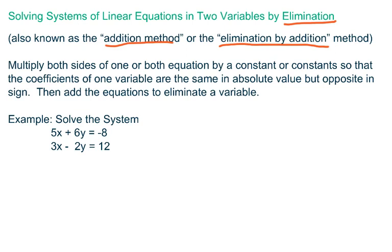How does this one work? At first glance, this will seem a little bit more complicated, but I think we can get the hang of it. What you do in this method is multiply both sides of one or both equations by a constant or constants so that the coefficients of one variable are the same in absolute value but opposite in sign. Then add the equations to eliminate a variable.